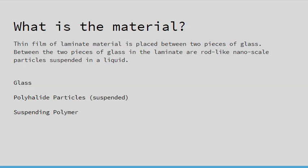So what is the material? To make the suspended particle device windows, there's a thin laminate material between two pieces of glass. The polyhalide particles are suspended in a suspending polymer, and when an electric current is applied to the particles, they align and allow light to pass through.